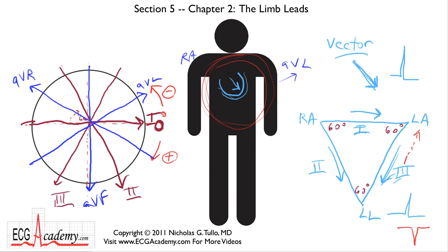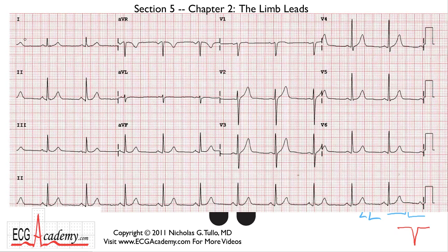Remember what these look like — we have Leads I, II, III, AVR, AVL, and AVF. Those are the limb leads on the first part of a 12-lead ECG.